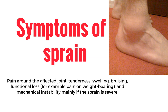Once you rule out a fracture — with or without an x-ray — then the symptoms will help a lot with the diagnosis of what the soft tissue injury is and its severity. Symptoms of a sprain typically include pain around the affected joint, tenderness, swelling, bruising, functional loss such as pain on weight bearing, and mechanical instability — mainly if the sprain is severe.